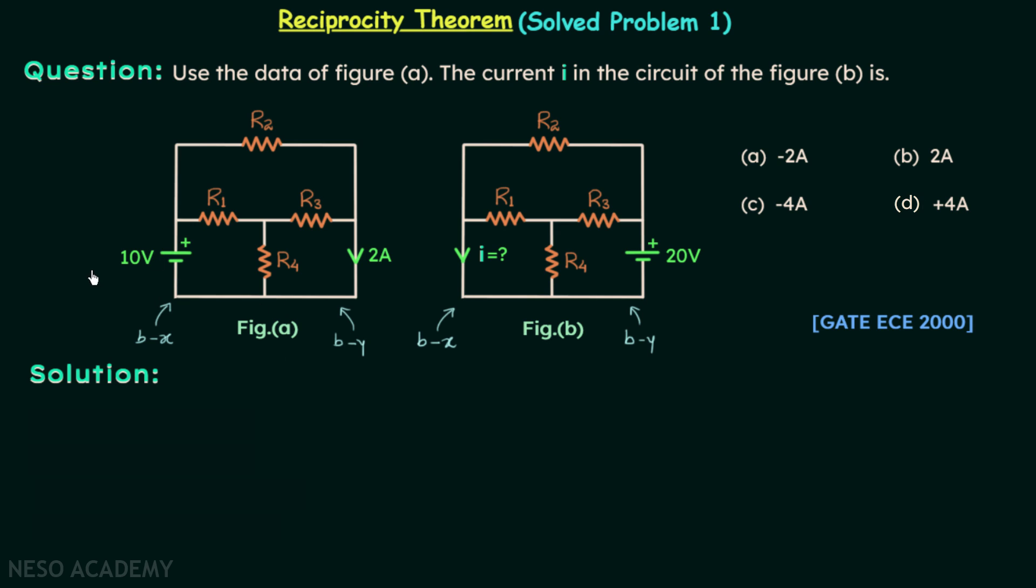Then we can say that in figure A, branch x is having the excitation and branch y is having the response. But in figure B, branch y is having the excitation.